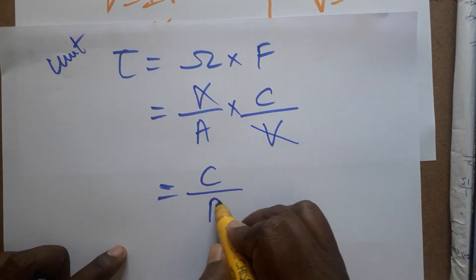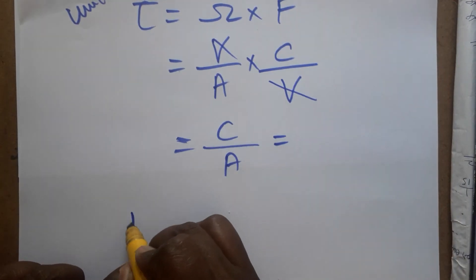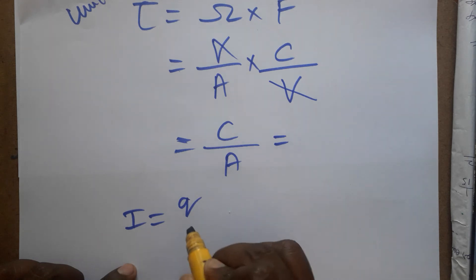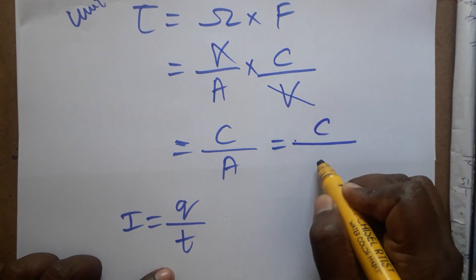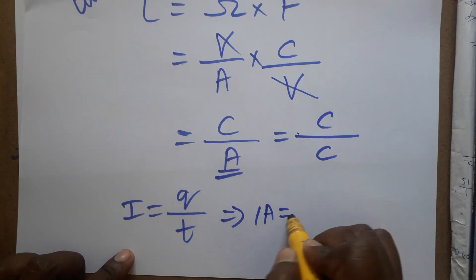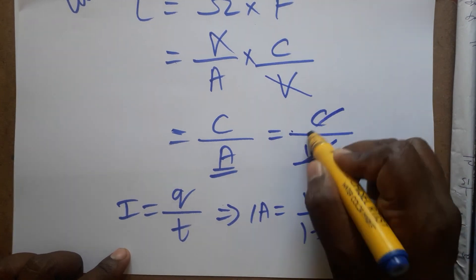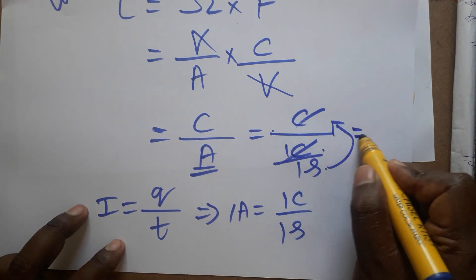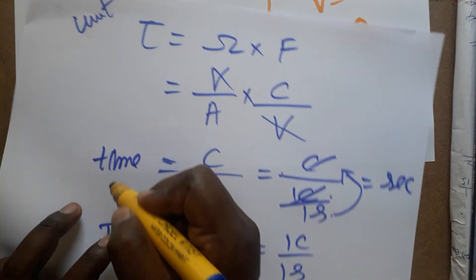Ampere is defined as charge flowing per unit time — that is, Coulombs per second. So one Ampere equals one Coulomb per one second. Substituting, the Coulombs cancel, and the denominator (seconds) moves to the numerator, giving us seconds.